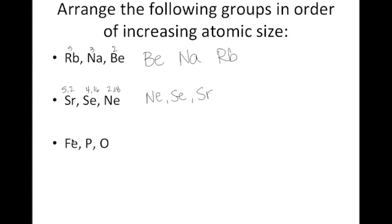For our last example, we have iron, phosphorus, and oxygen. Iron is in period four and it is a transition metal. Phosphorus is in period three, group 15. And oxygen is in period two, group 16. Out of these three, oxygen is closest to helium, so it's the smallest — the only two-story building here — followed by our three-story building phosphorus, followed by our four-story building iron.